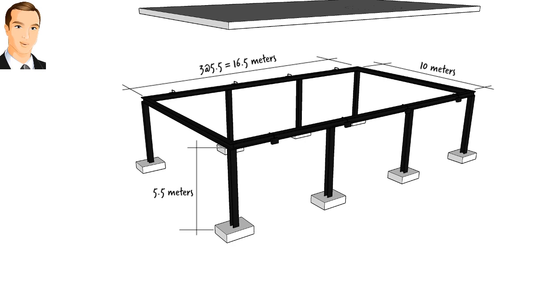For the purpose of our two-dimensional frame analysis, we can view the skeleton as consisting of two long frames and two short ones. Here, we are going to analyze one of the long frames under the dead roof load only.